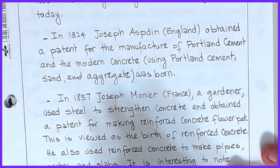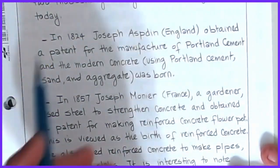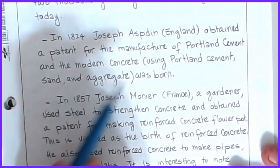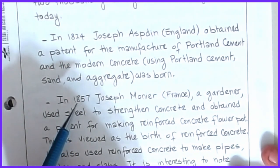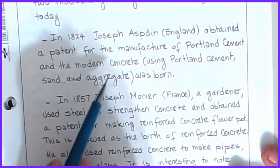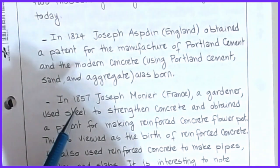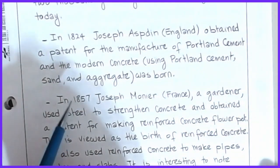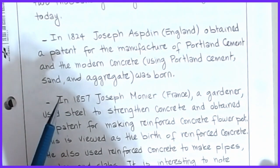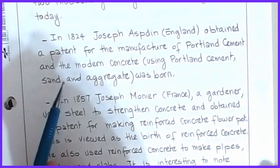In 1824, Joseph Aspdin was the first one to obtain a patent for the manufacture of Portland cement, which becomes the modern day binding agent and one of the most important materials in reinforced concrete. With Portland cement, sand, and aggregate, modern concrete was formed. This came out of an era where, coming out of the dark ages, the recipe had kind of vanished for a while — they kind of forgot how they did it. Eventually they came back around, and so this was the evolution.